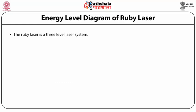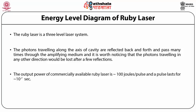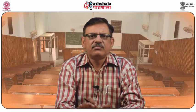The ruby laser is a three-level laser system. Photons traveling along the cavity axis are reflected back and forth, passing many times through the amplifying medium, while photons traveling in other directions are lost after a few reflections. The output power of commercially available ruby laser is 100 joules per pulse, with a pulse duration of 10⁻⁷ seconds. The flash lamp operation gives rise to pulsed output; during the time the flash lamp doesn't operate, the population of the upper level is depleted rapidly and lasing action doesn't occur until the next flash.